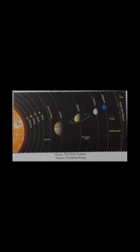Structure of the solar system. The diagram shows the Sun, Mercury, Venus, Earth, Mars, Ceres, Asteroid Belt, Jupiter, Saturn, Comets, Uranus, Neptune, Pluto, Eris, and Kuiper Belt Objects. Source: 9planets.org.